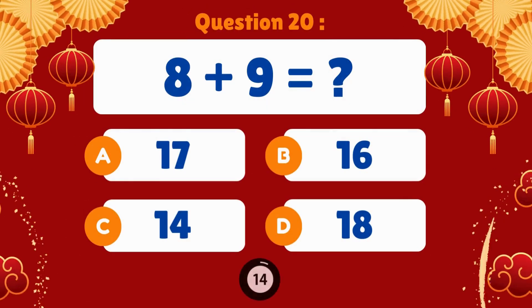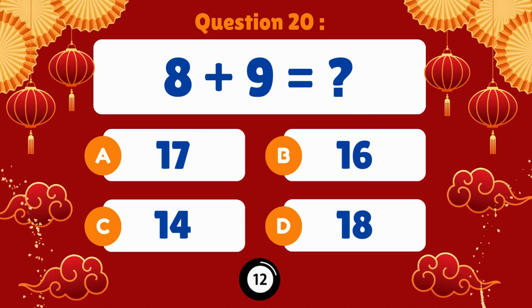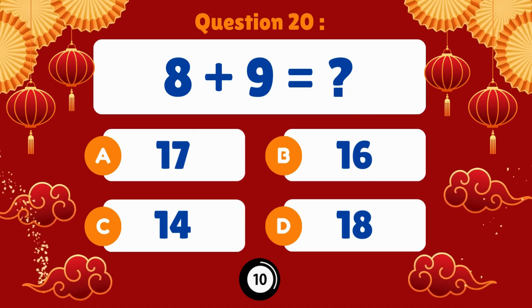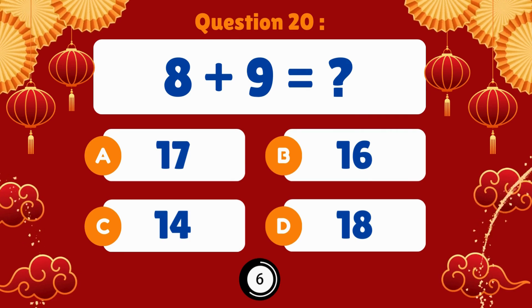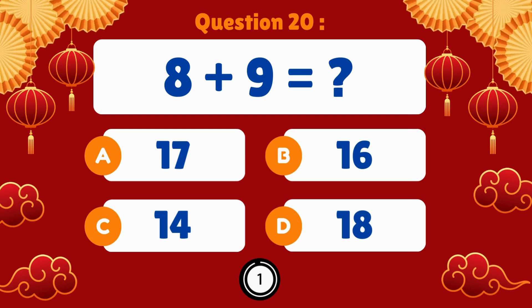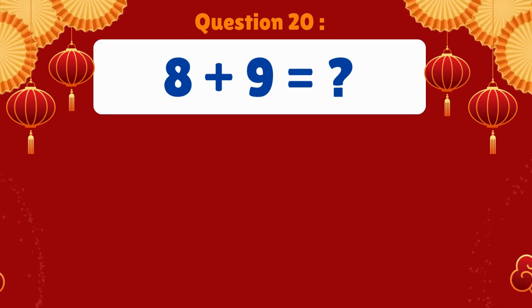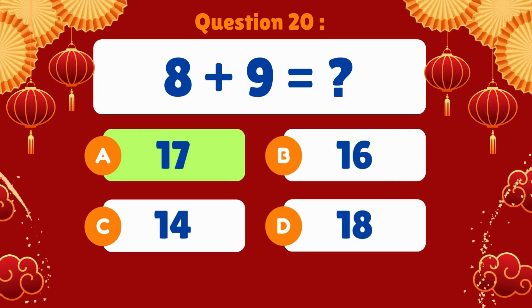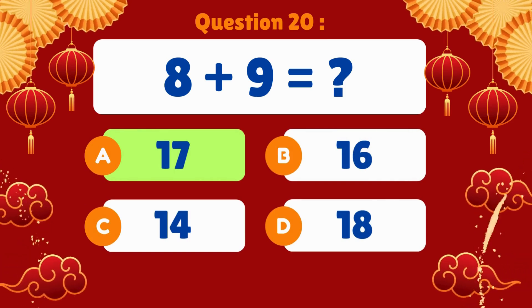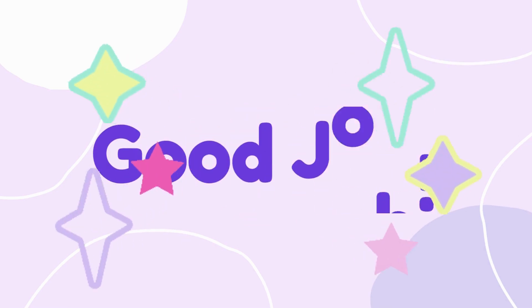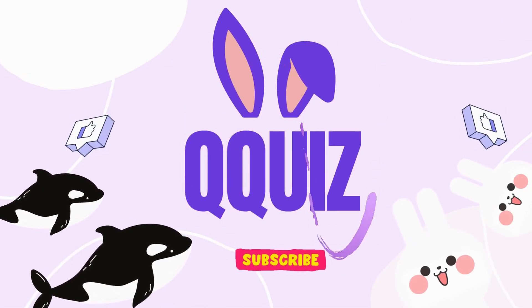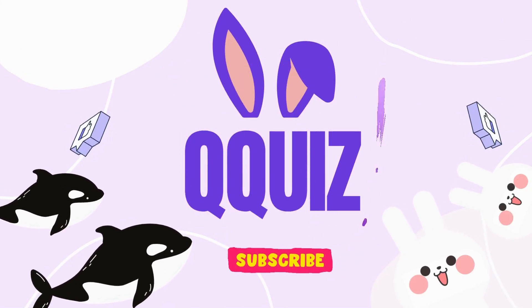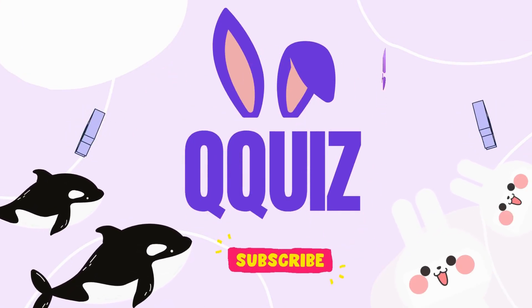Eight plus nine. Eight plus nine is equal to seventeen. Thank you.